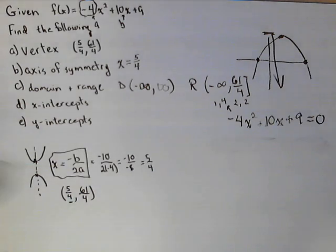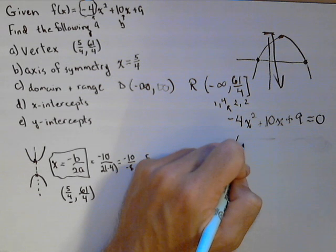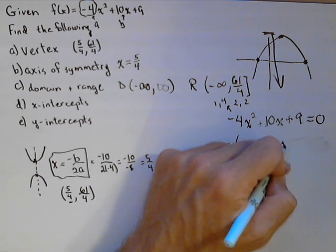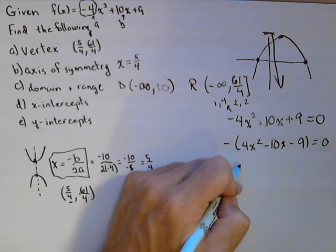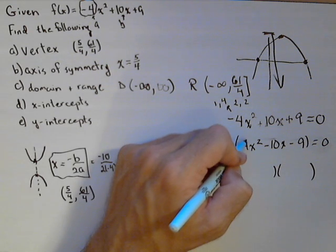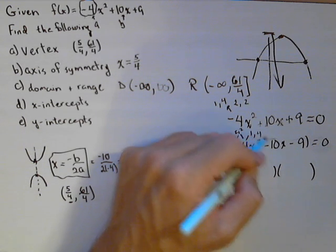Actually, let's go ahead and factor a negative out of that, because it will make it a little easier to deal with. So negative, because it won't affect what the zeros are. 4x squared minus 10x minus 9 equals 0. And now let's split it up into two factors. Again, now 4 can be split into 2 and 2 or 1 and 4.